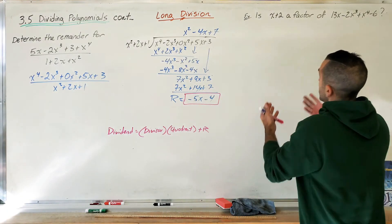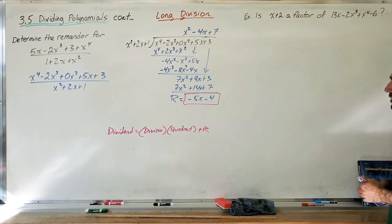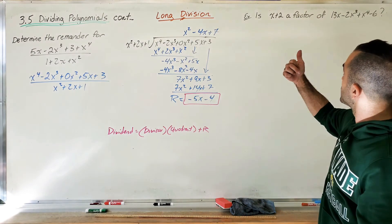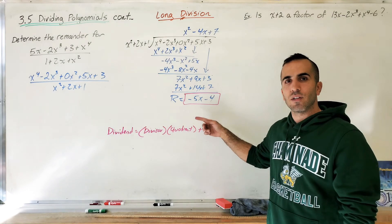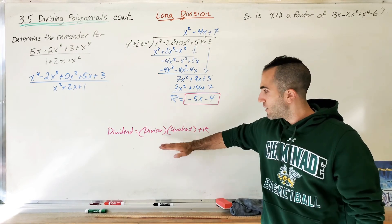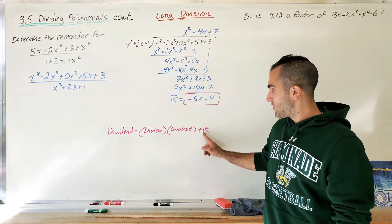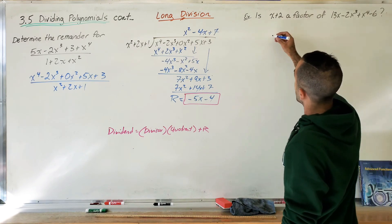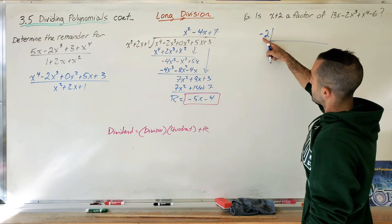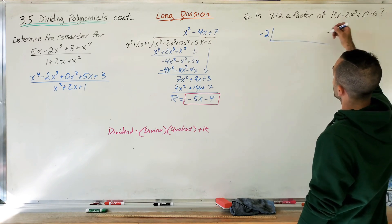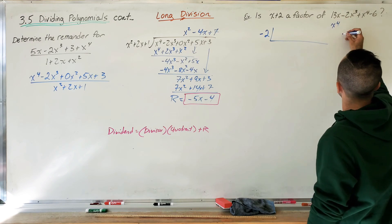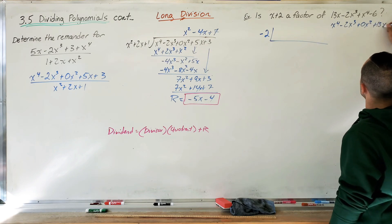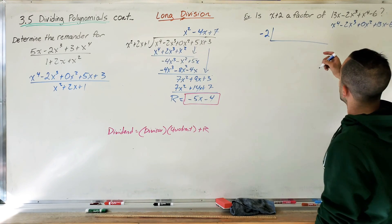Last thing: is x plus 2 a factor of this polynomial? It's different language to achieve the same thing. If I want to know if x plus 2 is a factor, I find the remainder — if the remainder is 0, then x plus 2 is a factor. This is linear so I use synthetic division. I rewrite the polynomial in descending order: x⁴ minus 2x³ plus 0x² plus 13x minus 6 — no x² term so I include a zero placeholder. My value is negative 2 from x plus 2 equals 0.